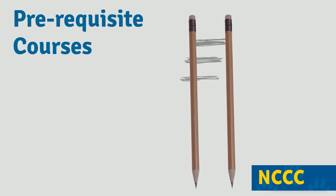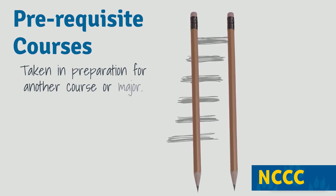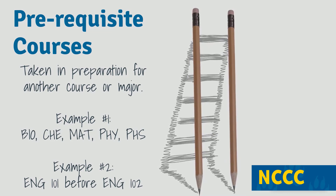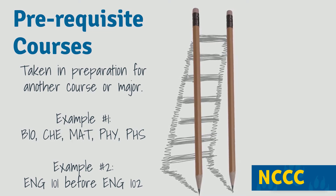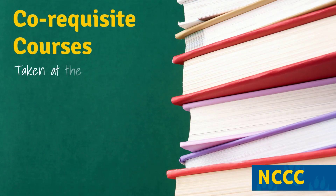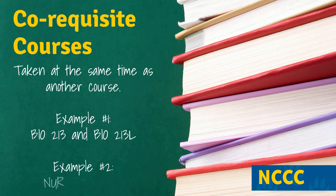Pre-requisite courses are courses that are taken in preparation for another course. For instance, you would need to take Math 116 Pre-Calculus before you can enroll in Math 120 Calculus 1. There are also prerequisite courses required to apply to a high-demand academic major at NCCC, such as Nursing or Physical Therapist Assistant. Corequisite courses are courses that are taken in conjunction or alongside another course. For instance, you would need to take both anatomy and physiology lecture with lab — you cannot enroll in just lab or just lecture.